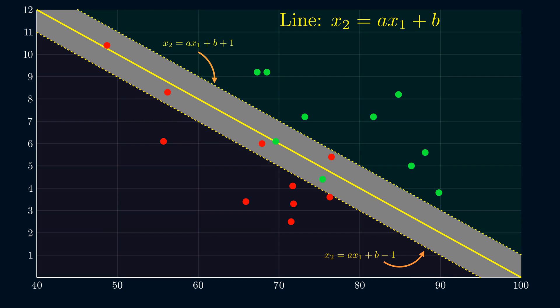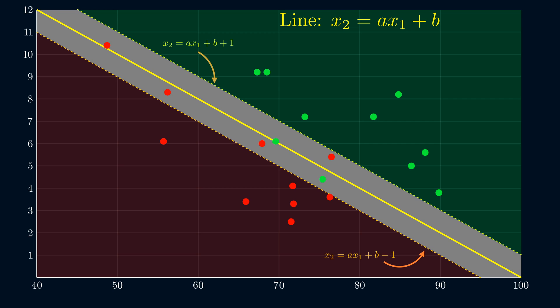We'd ideally like to force the green and red points to be in their own half spaces, but this isn't possible. Therefore, whenever a point lies in the wrong half space or is inside the buffer, we impose a penalty.